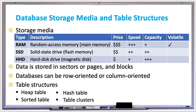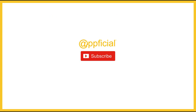A table cluster interleaves rows from two or more tables in the same storage area. The cluster key is a column available to all interleaved tables and determines the row order in which they're interleaved. Rows within the same cluster key value are stored together, and the cluster key is typically the primary key of one table and the corresponding foreign key of another table.